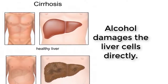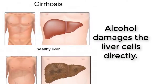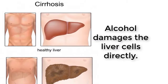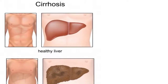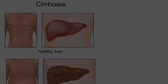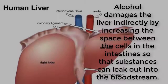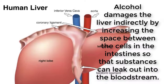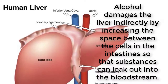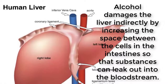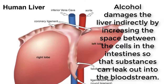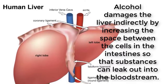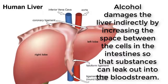Alcohol damages the liver indirectly by increasing the space between the cells and the intestines, so that substances can leak out into the bloodstream. From the bloodstream, they make their way back to the liver, and some of these toxins may start an inflammation reaction or directly damage cells.